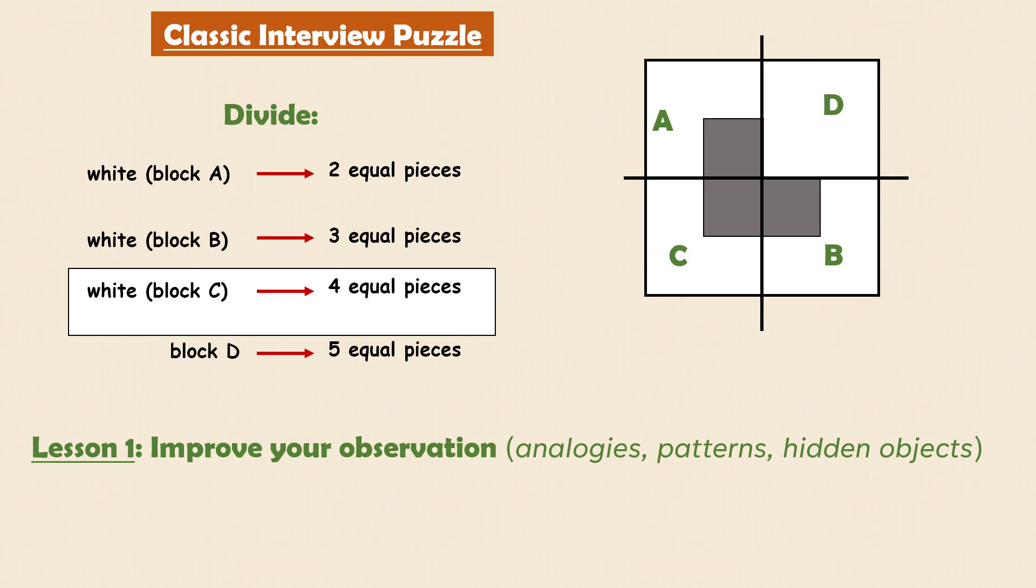If you observe the shape of the white region of block C, it's symmetrical to the highlighted part of the main given picture. This highlighted L shape in the picture is already divided into four identical and equal sized pieces, the three white regions and the dark L shaped piece. So you can divide the region C into four pieces in a similar way.